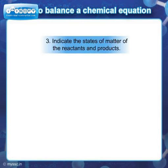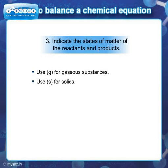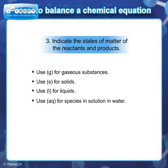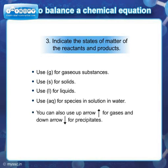Step 3: Indicate the states of matter of the reactants and products. Use G for gaseous substances, S for solids, L for liquids, and AQ for species in solution in water. You can also use an up arrow for gases and a down arrow for precipitates.